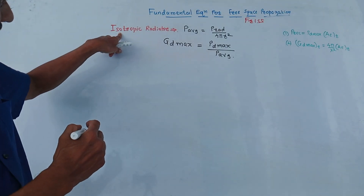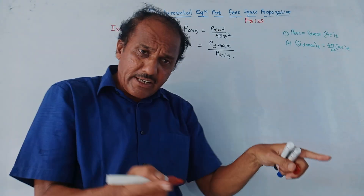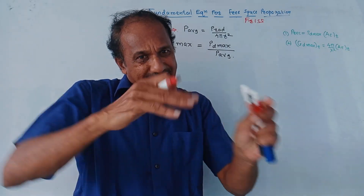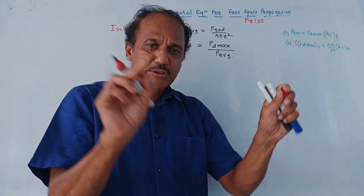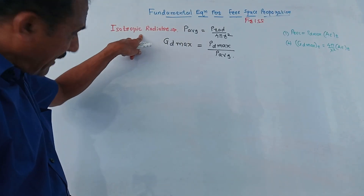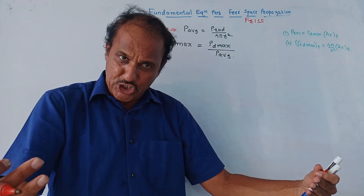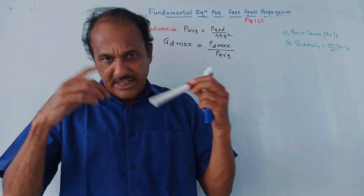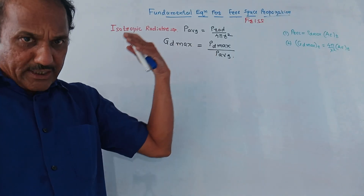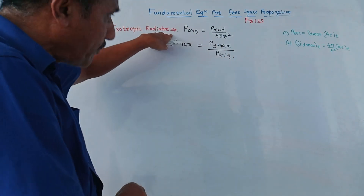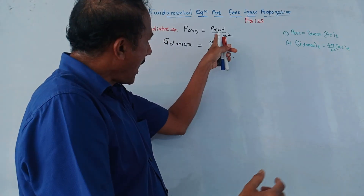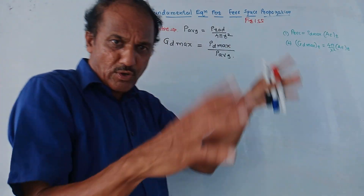There is one term called isotropic radiator. A radiator is something which radiates energy — for example, a transmitting antenna which radiates a signal. The word isotropic means equally in all directions. So an isotropic radiator is a device which radiates energy equally in all directions. For a sphere, the average power P_average is given by P_radiated divided by 4πr², where 4πr² is the surface area of a sphere.